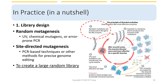Some common approaches include random mutagenesis, which involves introducing random mutations into the gene encoding the target protein, typically using mutagenic agents such as UV radiation, chemical mutagens, or error-prone PCR. Site-directed mutagenesis involves introducing targeted mutations into specific regions of the gene encoding the protein, typically using PCR-based techniques or other methods for precise genome editing.